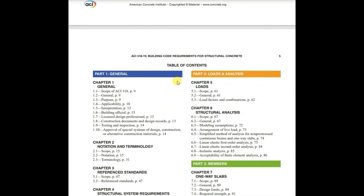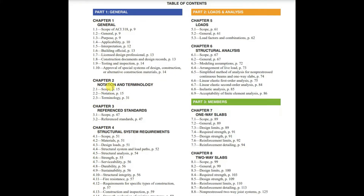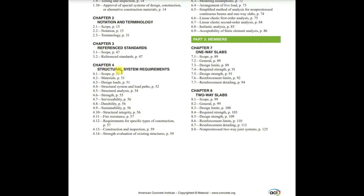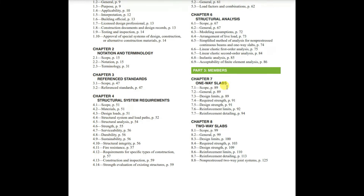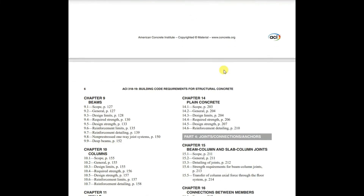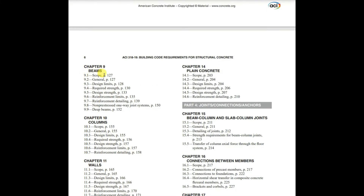Let's look into the table of contents. Chapter 1 covers general details. Chapter 2 is notation and terminology. Chapter 3 is for referenced standards. Chapter 4 is structural system requirements. Chapter 5 is for loads and analysis. Chapter 6 is for structural analysis. Chapter 7 is for one-way slabs. Chapter 8 is for two-way slabs.